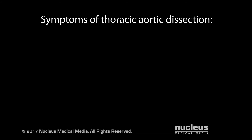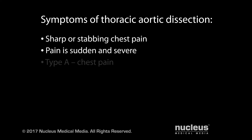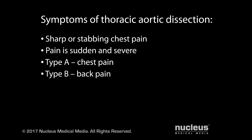The most common symptom of thoracic aortic dissection is sharp or stabbing chest pain, usually sudden and severe. If you have a type A dissection, you're most likely to feel pain in your chest. If you have a type B dissection, you're more likely to feel pain in your back than your chest. If you have these symptoms, you should seek immediate medical attention, as this condition can be life-threatening.